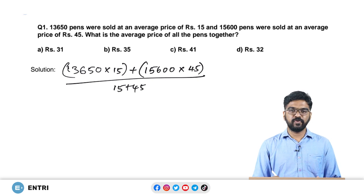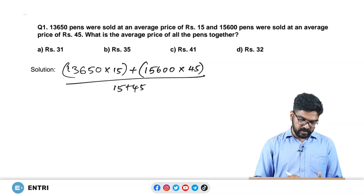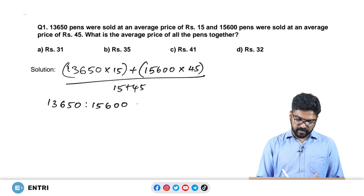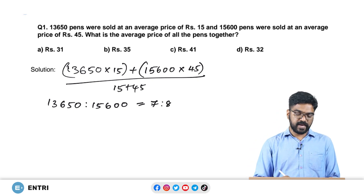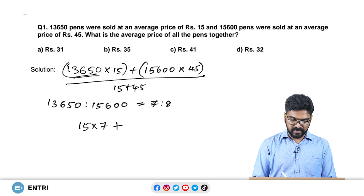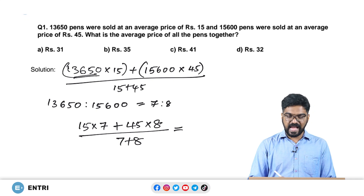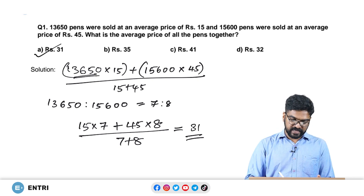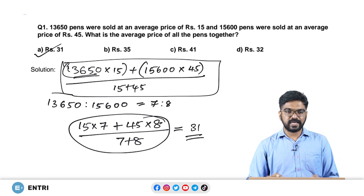Instead, since only the ratio matters, take the ratio of 13,650 to 15,600, which simplifies to 7 is to 8. So instead of using the large numbers, we write 15 times 7 plus 45 times 8, divided by 7 plus 8. This calculation gives the average price of all the pens as 31, which is option A. This makes the calculation much simpler compared to the original approach.